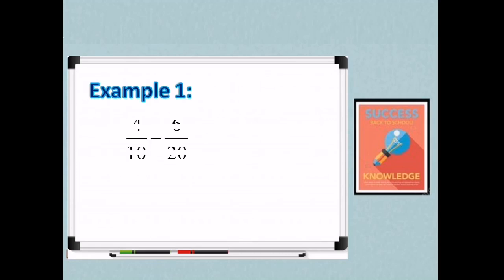Example 1. 4 over 10 minus 6 over 20. So our denominators are 10 and 20. And the LCD is 20. How are we going to get the numerators? So probably we need to divide and multiply. So that is 20 divides 10 is 2. Kaya yung 2 ay nilagay natin sa taas na i-multiply natin sa 4.